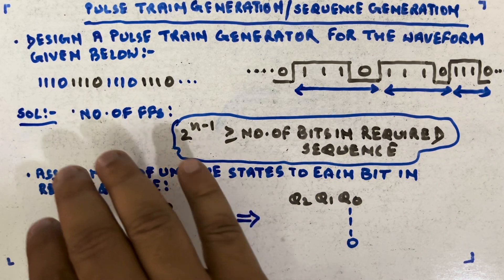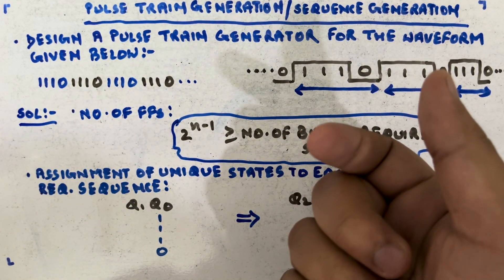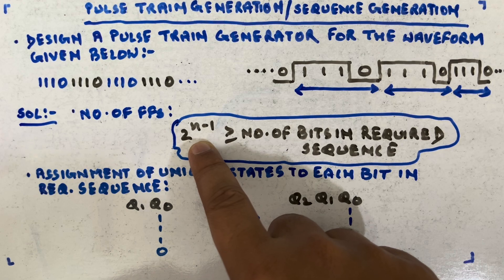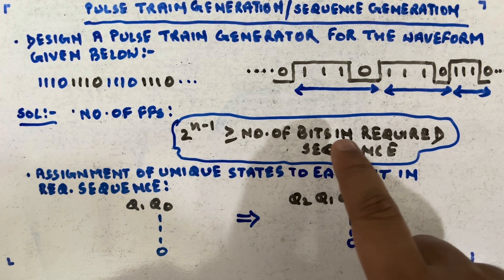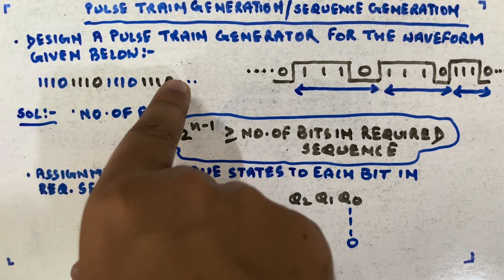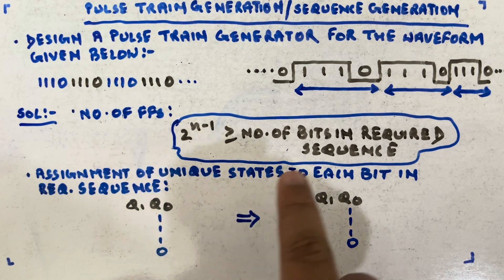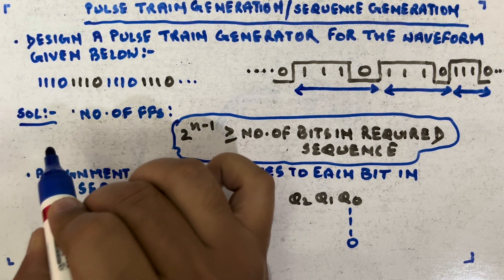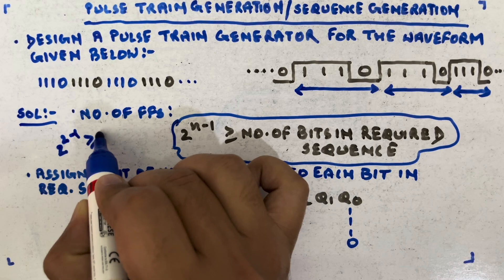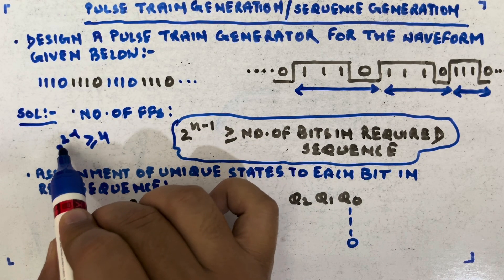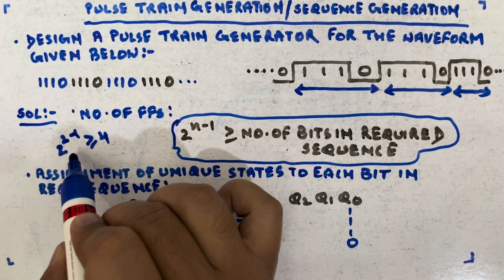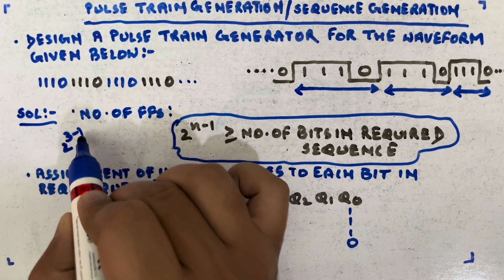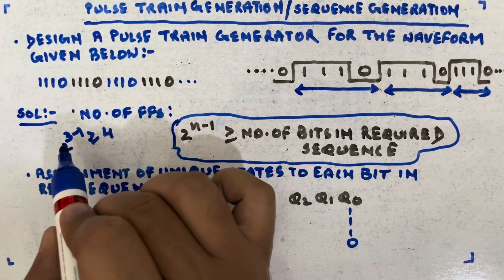In the solution, first we figure out the number of flip-flops required. The general expression is: 2^(n−1) must be greater than or equal to the number of bits in the required sequence. The required sequence is one one one zero — four bits. Let's try n=2: 2^(2−1) = 2^1 = 2, and 2 is not greater than or equal to 4, so n=2 fails.